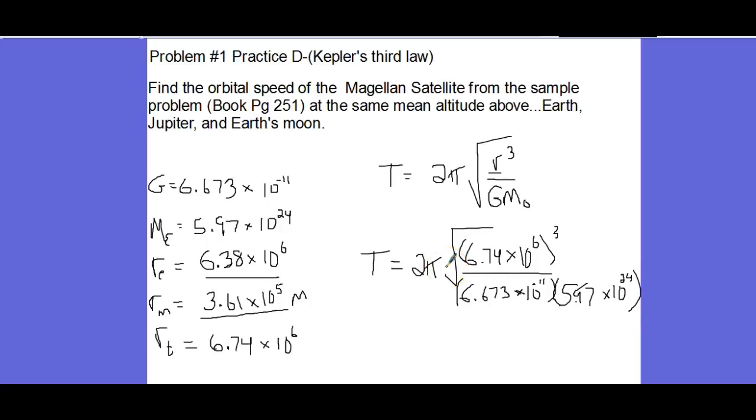On the top I'm going to use my calculator for that. 6.74 to the 6th, I'm going to cube it, and we end up with 3.06 times 10 to the 20th. That's my top. And then I'm going to divide by this thing here, and I'm going to take 6.673 times 5.97, and that gives me 39.8.